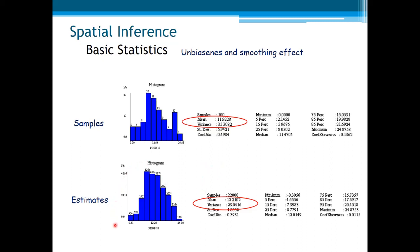Remember, Kriging is an unbiased estimator of the mean. As there are no evident clusters of samples, the arithmetic mean of the samples in this case can be considered a confident estimator of the global mean. Now let us see the variance: the variance of the samples is 35.3, and the variance of the estimates is 23.